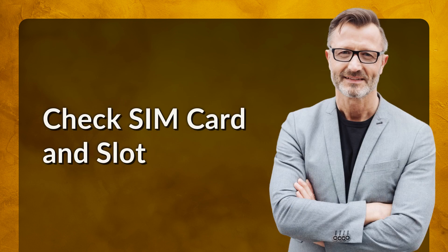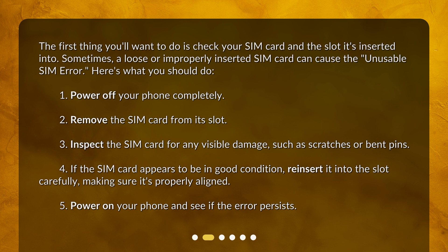Check SIM card and slot. The first thing you'll want to do is check your SIM card and the slot it's inserted into. Sometimes, a loose or improperly inserted SIM card can cause the unusable SIM error. Here's what you should do: 1. Power off your phone completely. 2. Remove the SIM card from its slot. 3. Inspect the SIM card for any visible damage, such as scratches or bent pins. 4. If the SIM card appears to be in good condition, reinsert it into the slot carefully, making sure it's properly aligned. 5. Power on your phone and see if the error persists.